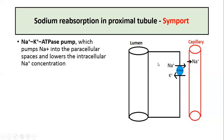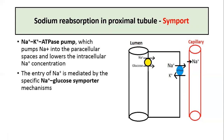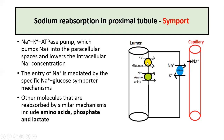Sodium moves through the sodium-glucose symporter present on the luminal membrane. This symporter transports both sodium and glucose inside the cell and is also called SGLT. Sodium can also move through other symporter proteins such as sodium-amino acid, sodium-phosphate, and sodium-organic acid symporters.